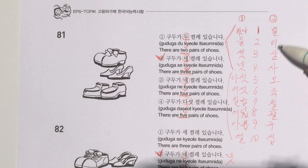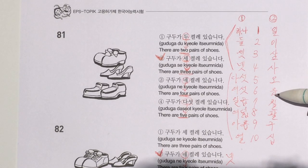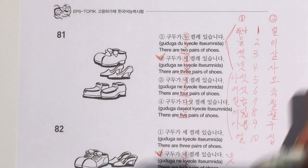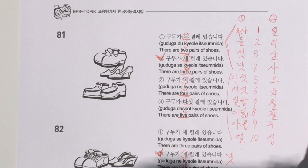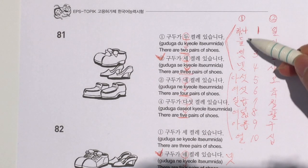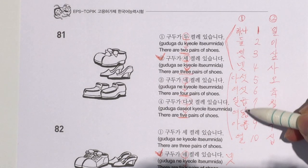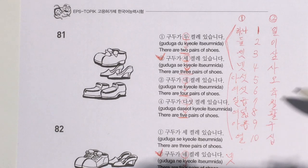To recap both number systems: 1, 2, 3, 4, 5, 6, 7, 8, 9, 10 in native Korean is 하나, 둘, 셋, 넷, 다섯, 여섯, 일곱, 여덟, 아홉, 열. We learned them like this so they are easy to remember.